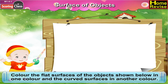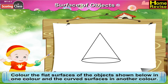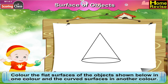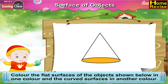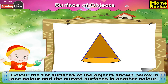Next is an ice cream cone, but turned upside down. Now here is the flat surface — colour it with this colour. And here is the curved surface — colour it with this colour.